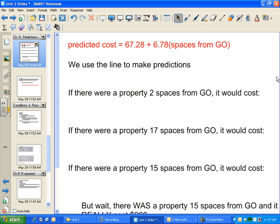If there were a property two spaces from GO, how much would it cost? There isn't one, but we can use this equation in red to make a prediction. Predicted cost equals—I'll put a hat on it to stand for predicted—67.28 plus 6.78 times the number of spaces from GO.